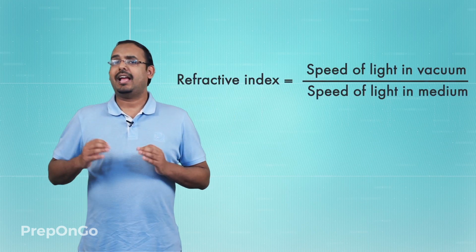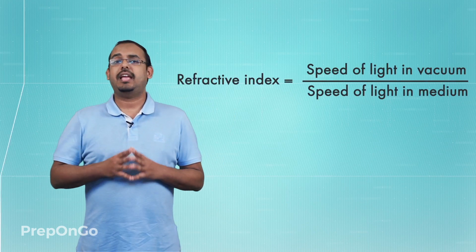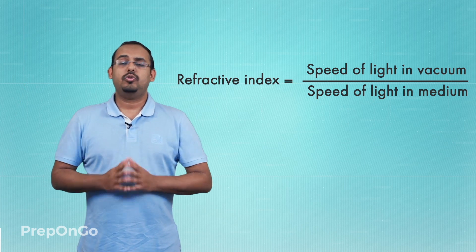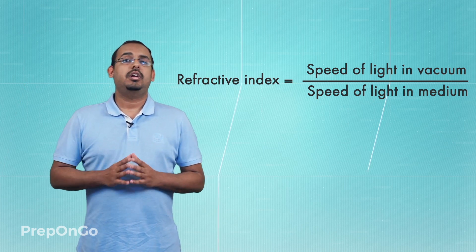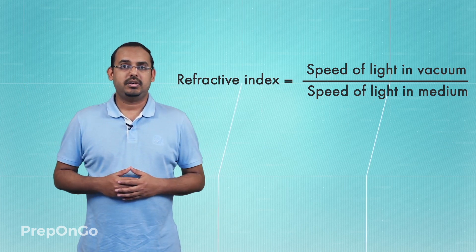To differentiate one medium from another on the basis of the speed of light, a quantity known as refractive index has been defined. Refractive index is basically an indication of the relative speed of light in a particular medium compared to the speed of light in a vacuum. It can be calculated as the ratio of the speed of light in vacuum to the speed of light in any particular medium.